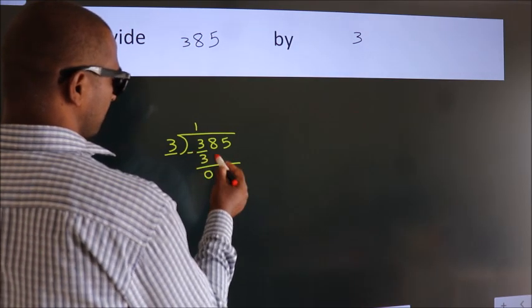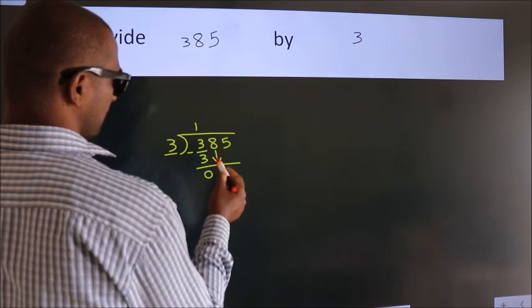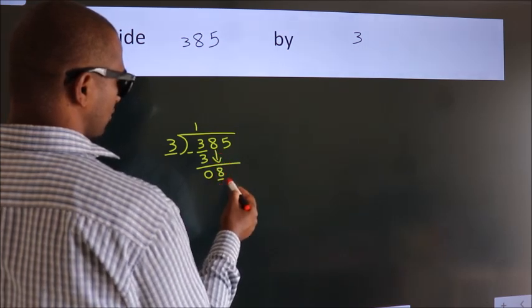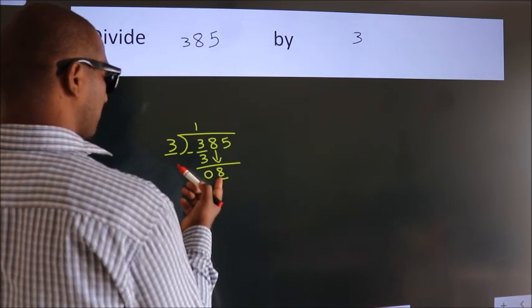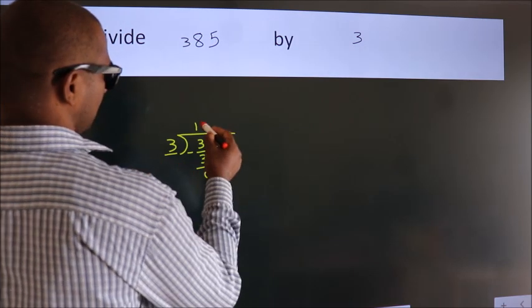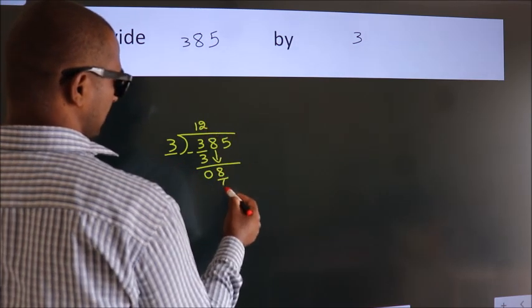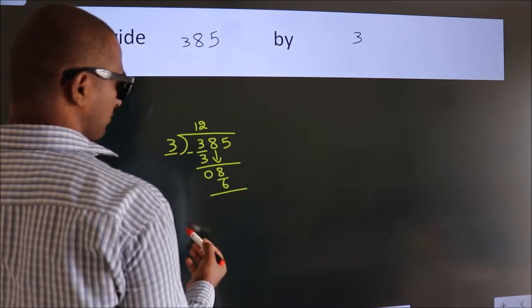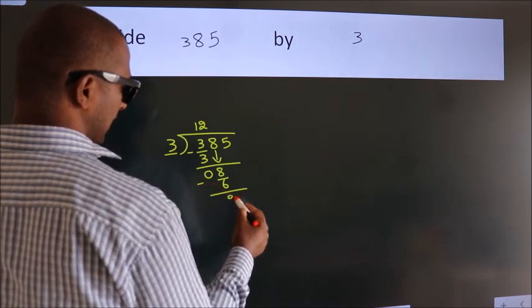After this, bring down the beside number. So, 8 down. So, 8. A number close to 8 in 3 table is 3 2s 6. Now, we subtract. We get 2.